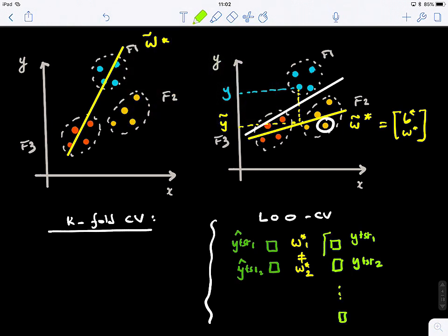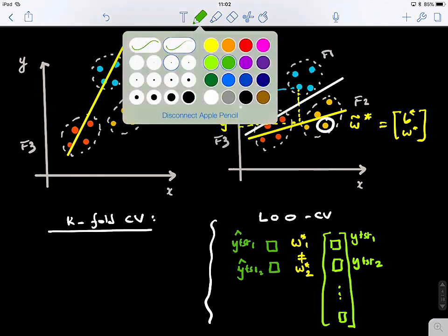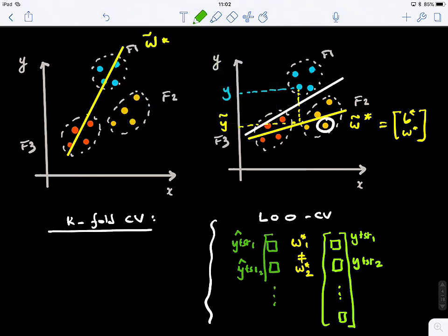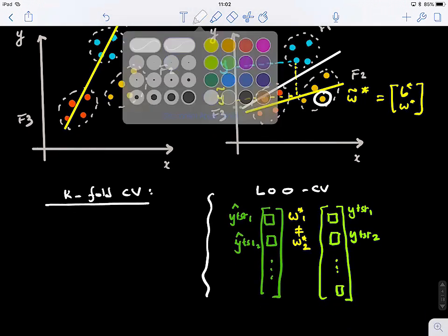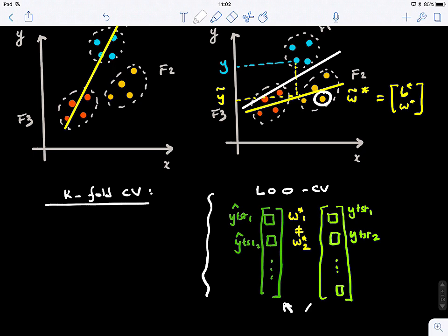So for N subjects, this is the ground truth, what we call the target score vector, and this is the predicted score vector. Then I will compute simply the MSE between these two guys, so the squared error.